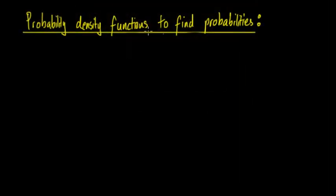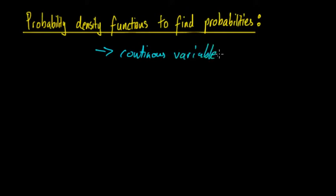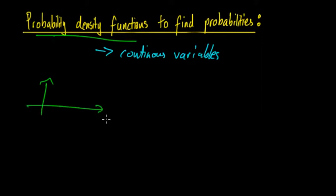In this video we're going to be looking at probability density functions and how we can use them to find probabilities relating to continuous variables. In the previous video we looked at what probability density functions actually are — basically when you have a graph that represents continuous probabilities, the area underneath at particular intervals gives you the probability for those intervals. We're now going to find out how to find that area and therefore find the probability.